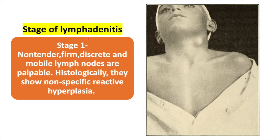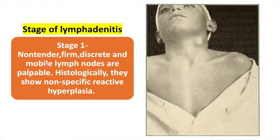In the first stage — the stage of lymphadenitis — we notice non-tender, firm, discrete, and mobile lymph nodes that are palpable. These are palpable non-tender swellings because TB is not associated with acute inflammation. Histologically they show non-specific reactive hyperplasia. So these are palpable, non-tender, firm, discrete, mobile lymph nodes.